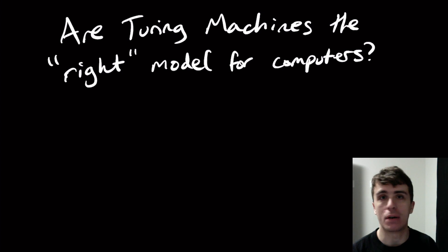Any type of variant that you can come up with, you can show is equivalent to the standard model in one way or another. You can never find something that's more powerful than the Turing machine, or at least we're not smart enough to find such a thing. So what we want to answer is, are they actually the right model for computers?